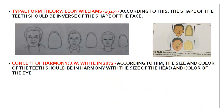The next theoretical concept is the typal form theory, given by Leon Williams in 1917. According to this theory, the shape of the teeth should be the inverse of the shape of the face. The next concept is the concept of Harmony, given by J.W. White in 1872. According to J.W. White, the size and color of the teeth should be in harmony with the size of the head and the color of the eye.